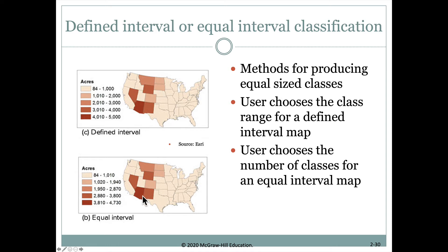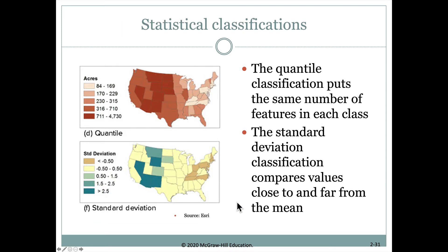We could also use an equal interval approach. After building the histogram, we divide the x-axis into even partitions. In this case, every 920 units we make a new class break — so it goes to here, then another 920, with 920 as the value range between each pair of breaks. That's called equal interval, and it's another way to create these classification breaks.